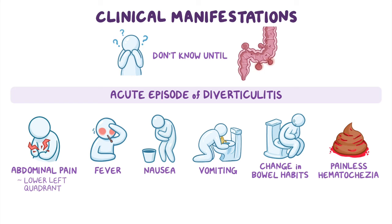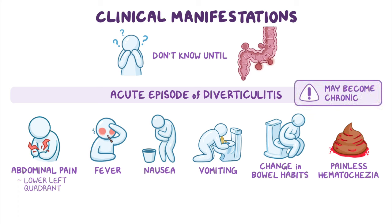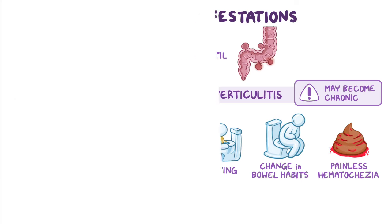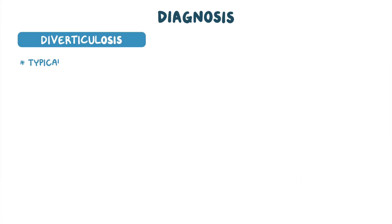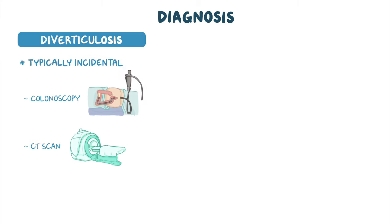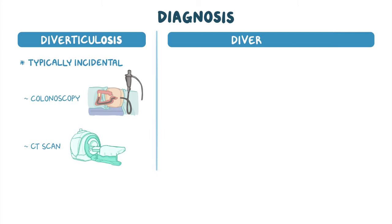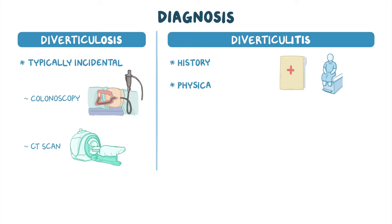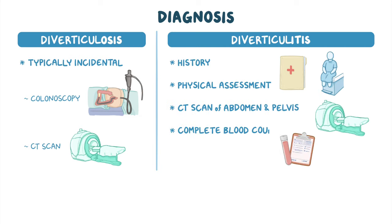Moreover, if the acute episode of diverticulitis does not completely resolve, it may become chronic. Diagnosis of diverticulosis is typically made incidentally during a routine colonoscopy or a CT scan done for another reason entirely. On the other hand, the diagnosis of diverticulitis starts with history and physical assessment, followed by a CT scan of the abdomen and pelvis. A complete blood count might also be performed, typically showing leukocytosis, along with elevated inflammatory markers like CRP.